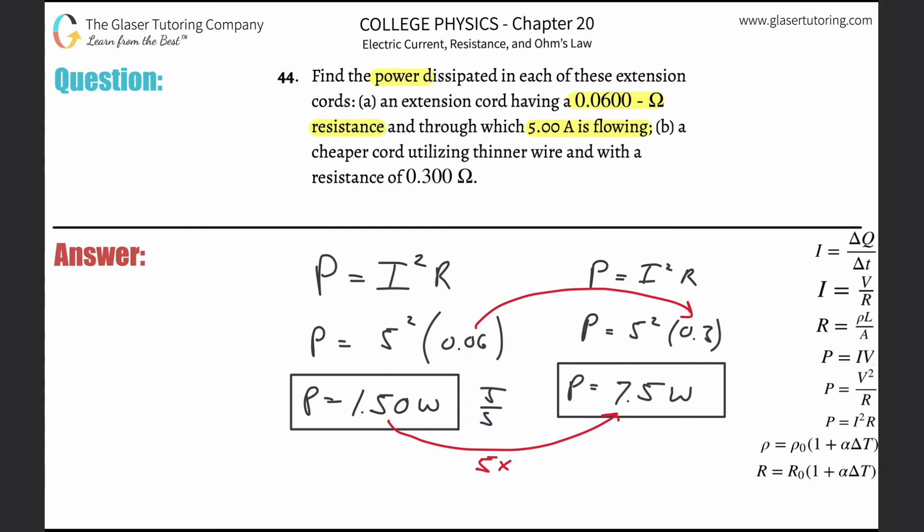So what happened to the power? There's also a five times increase as well. That's because the power is dependent linearly - it's directly related to R. As R goes up by a factor of five, power goes up by a factor of five.